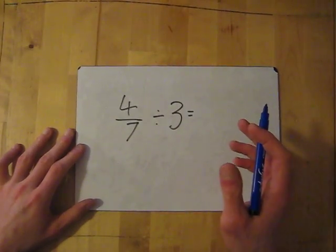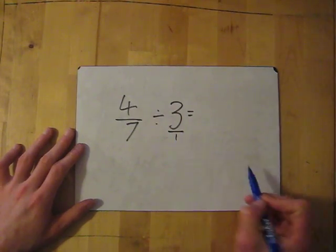So if I've got 4 7ths divided by 3, first thing I do, change this into a fraction. So it's now 3 over 1.